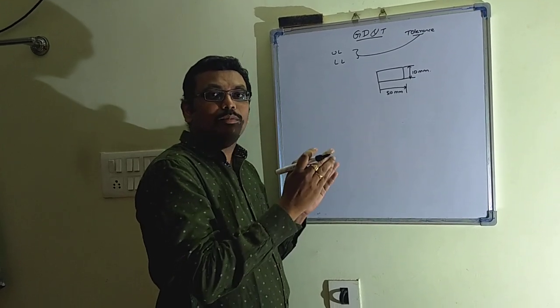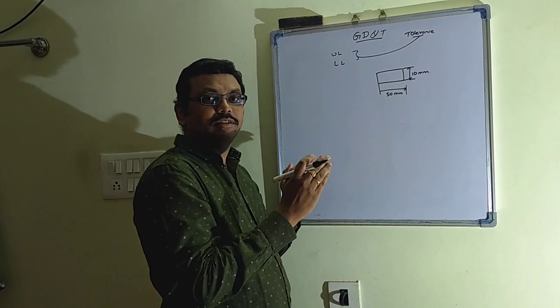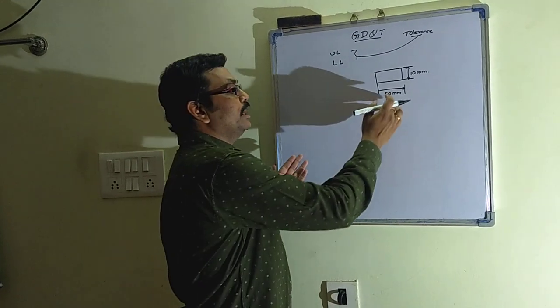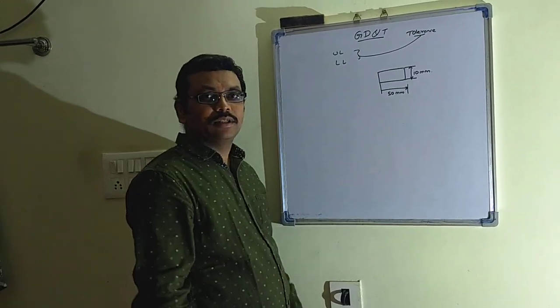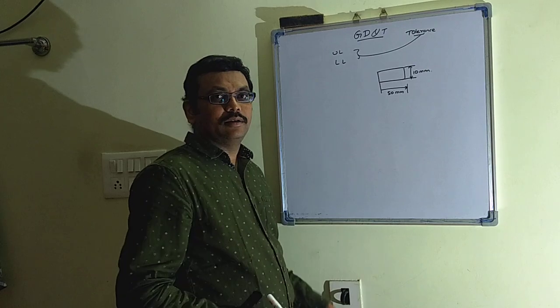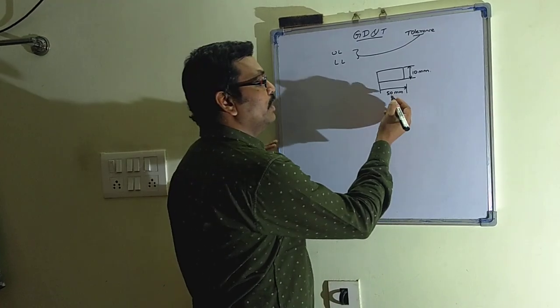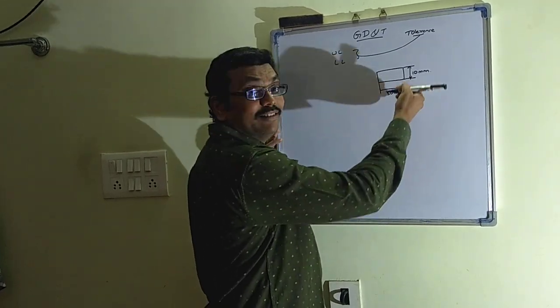Because during the manufacturing process this dimension may vary. So for that reason we have to give some upper limit as well as the lower limit.